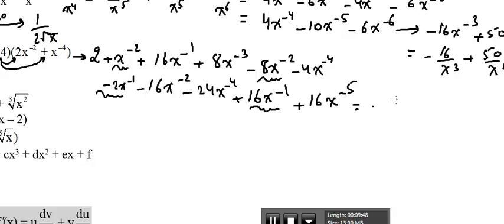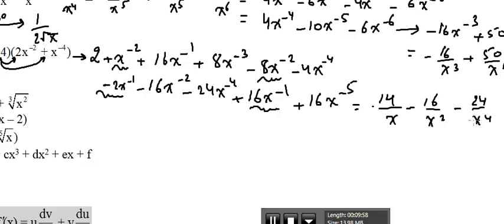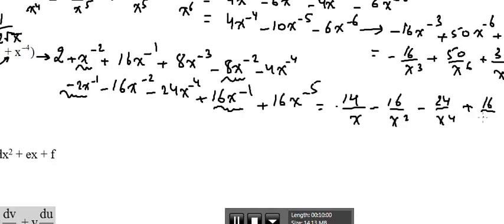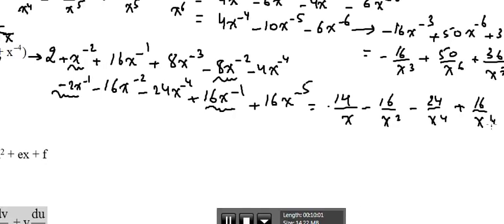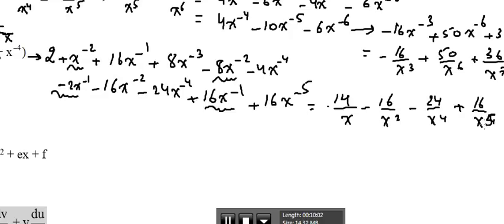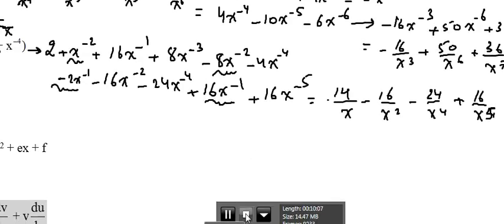Combining like terms: minus 2x to the power minus 1 plus 16x to the power minus 1 is 14x to the power minus 1, so that's 14 over x. Minus 16 over x², minus 24 over x⁴, and plus 16 over x⁵. That's the final answer. I don't think we left any one of them out. End of video — see you next video.